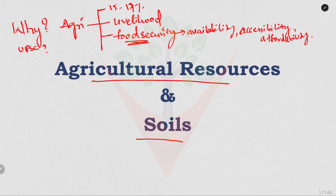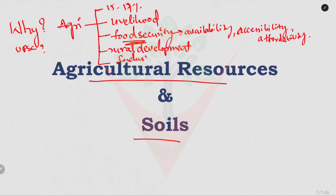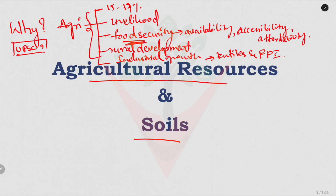Agriculture also helps in rural development and industrial growth. Many industries — textiles, food processing industries — depend upon agriculture. As a civil servant, we should know about all this because we should make policies on it. That's why it is important to know and study about agriculture, and that's why UPSC has included this agricultural topic in the syllabus.